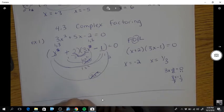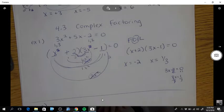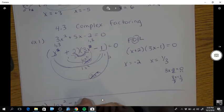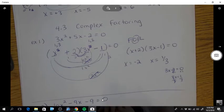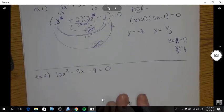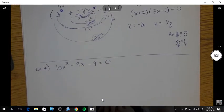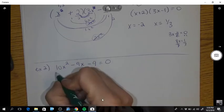Okay. Example 2. Okay, we have 10x squared minus 9x minus 9 equals 0.